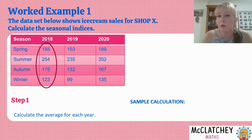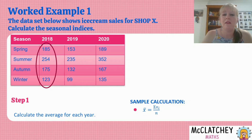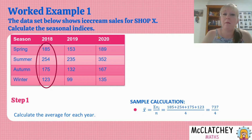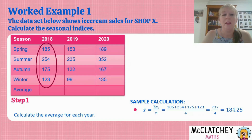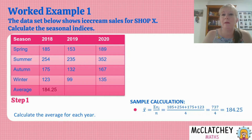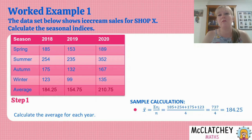Some working would be required. So firstly we write the formula: the mean equals the sum of all values divided by how many there are. Then we substitute and work through to get an answer. We can see that our mean for 2018 is 184.25. We're going to insert a row and put those averages along the bottom, then repeat that process for 2019 and 2020. So then we've got our three averages.